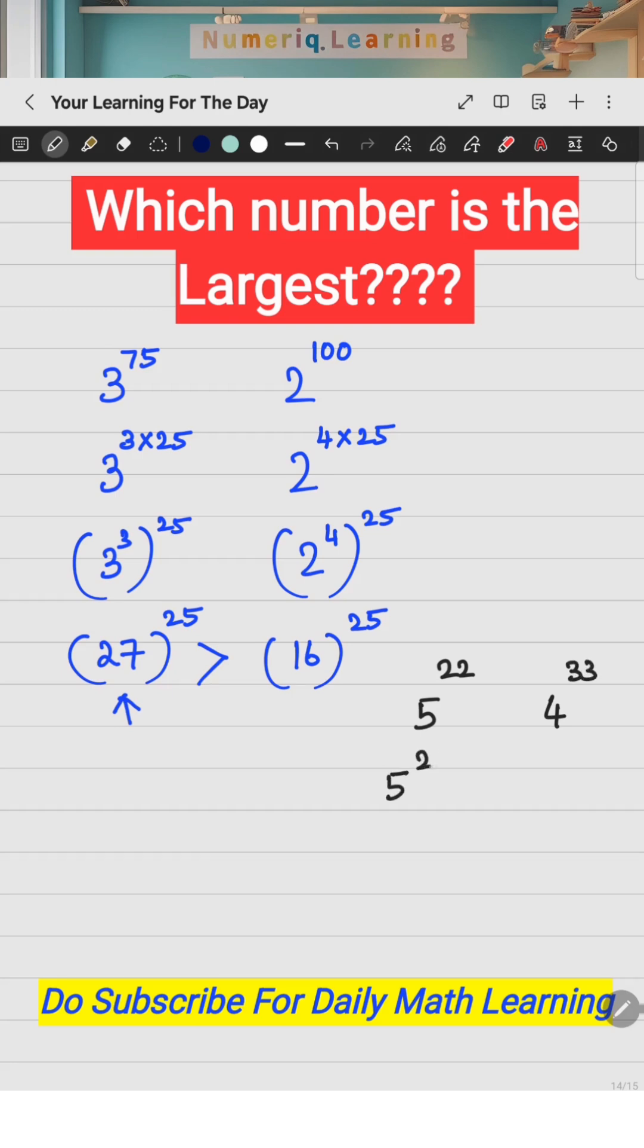So 22 can be written as 2 into 11, and 33 can be written as 3 into 11. This is nothing but 5 square whole raised to the power 11, and this is nothing but 4 cube whole raised to the power 11.